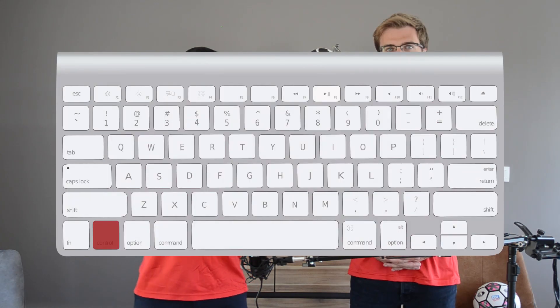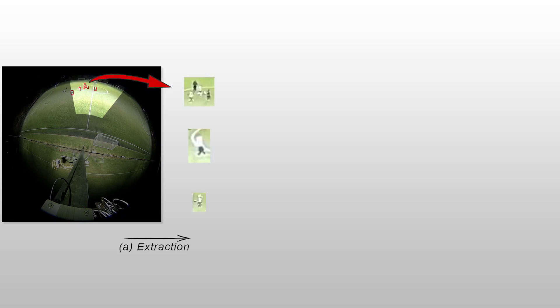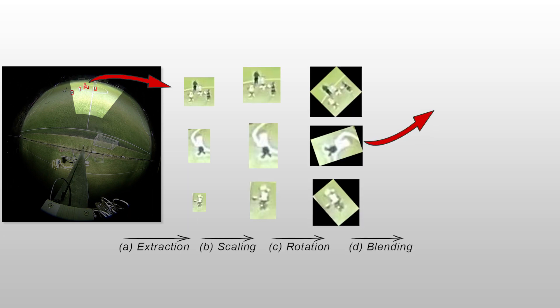This is where we have to be creative — literally Ctrl-C, Ctrl-V. Since we know from the teacher network where the players are, we can extract them and copy-paste them outside of that region. Of course, we have to account for the distortion of the fisheye lens and scale, rotate, and blend the new players so the overall image looks realistic. This gives us new artificial players with associated bounding boxes.